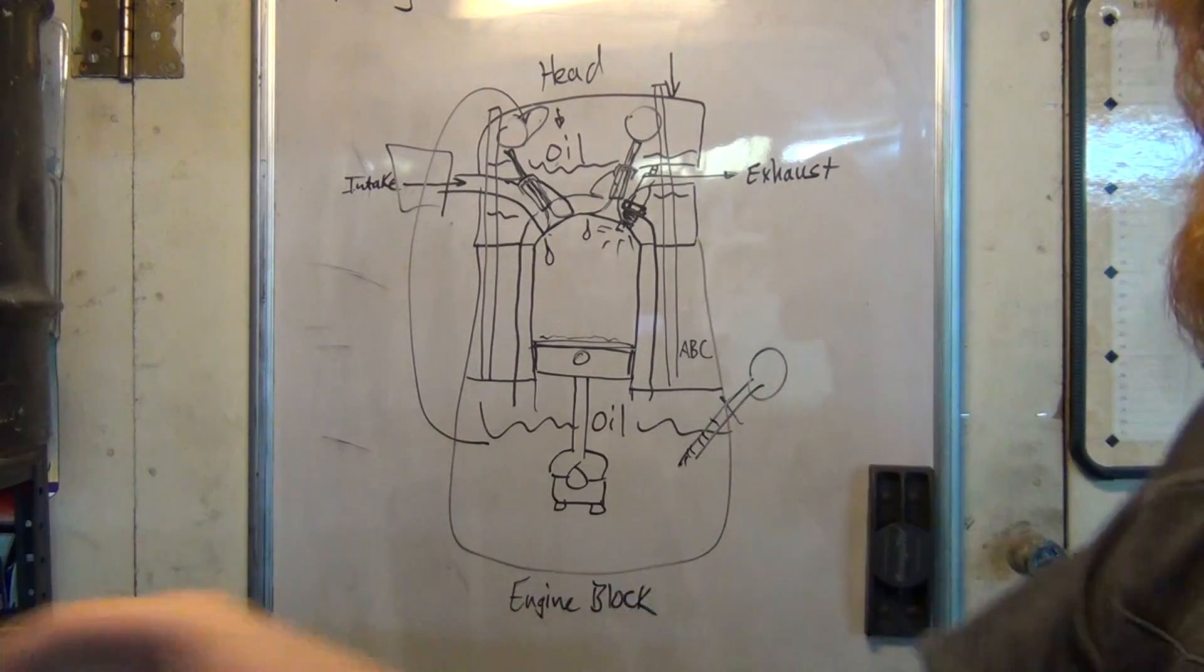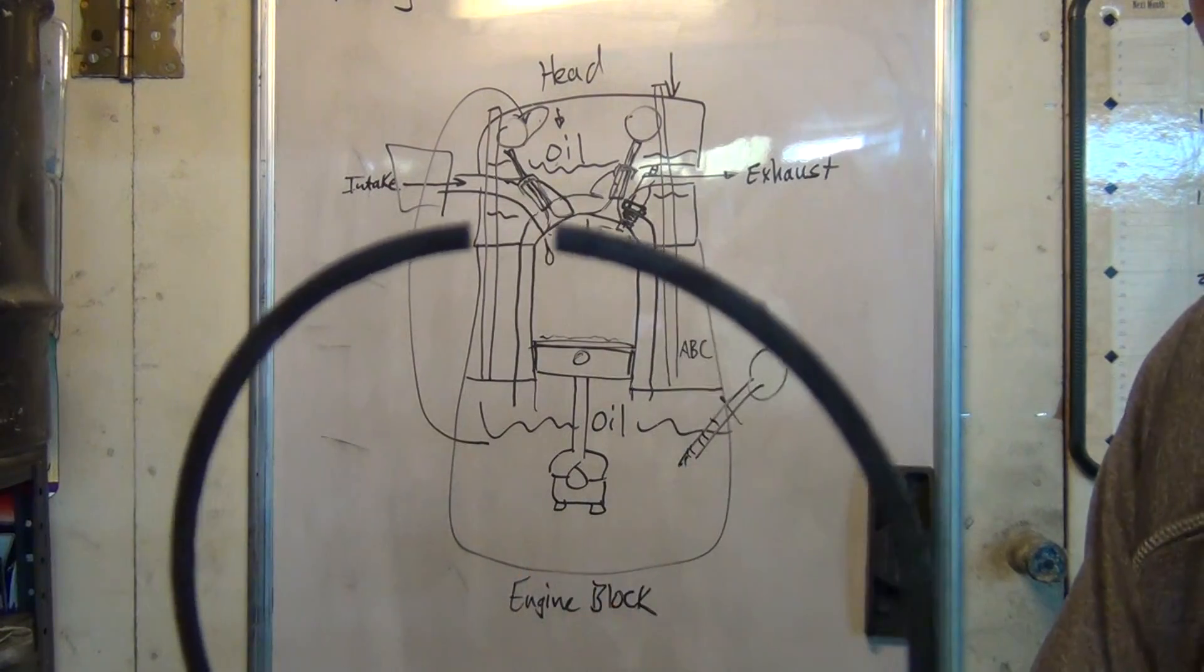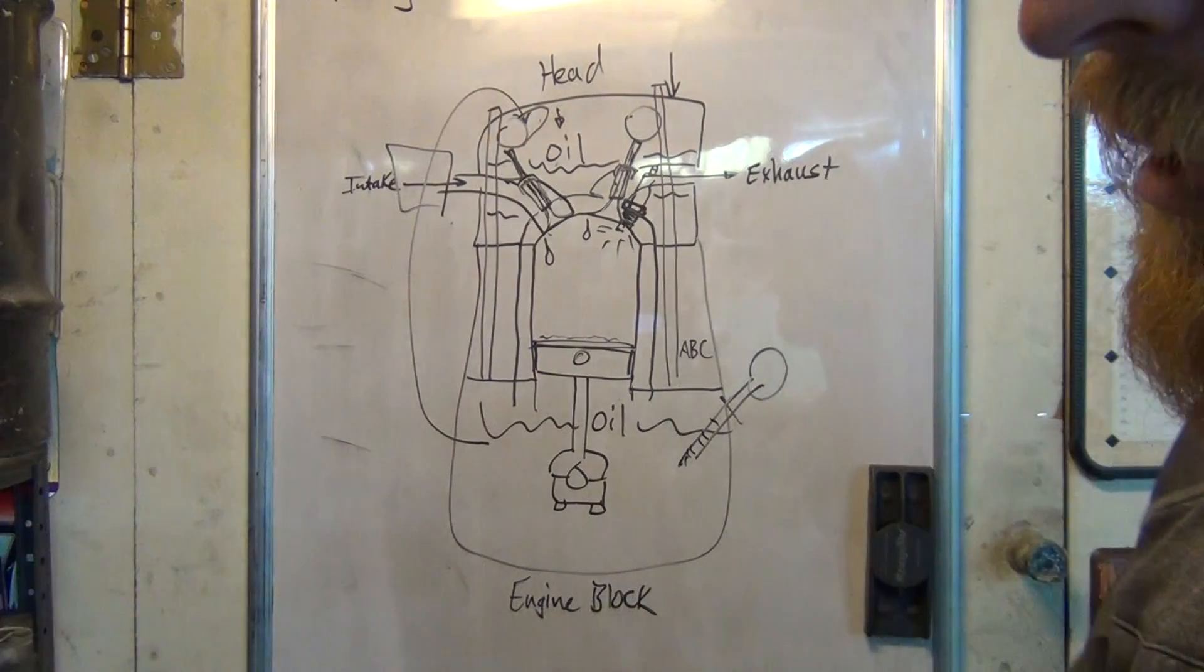When you put them on, you want to make sure that these openings are rotated at different angles. Because if you have that little gap right in a row with another gap, then you'll have a compression leak. A brand new engine, everything's rock and roll.